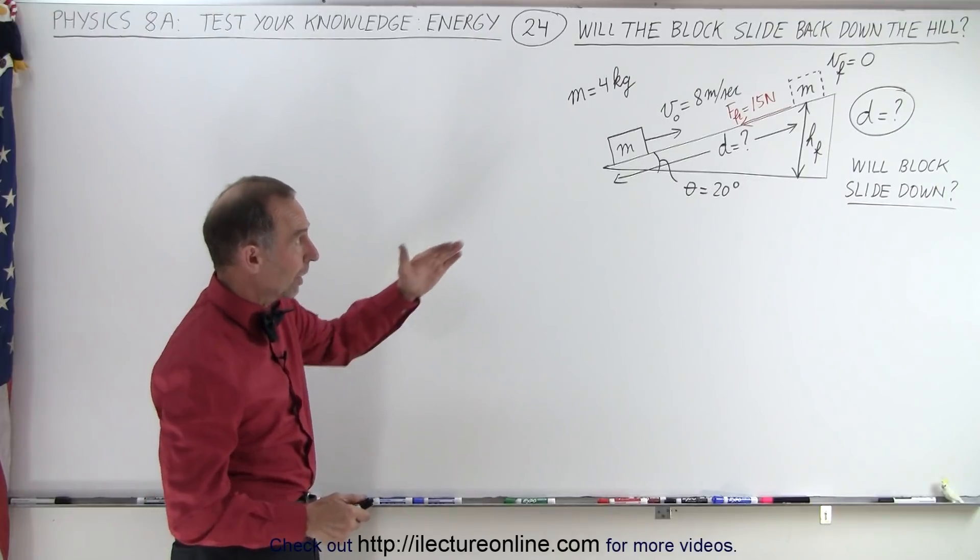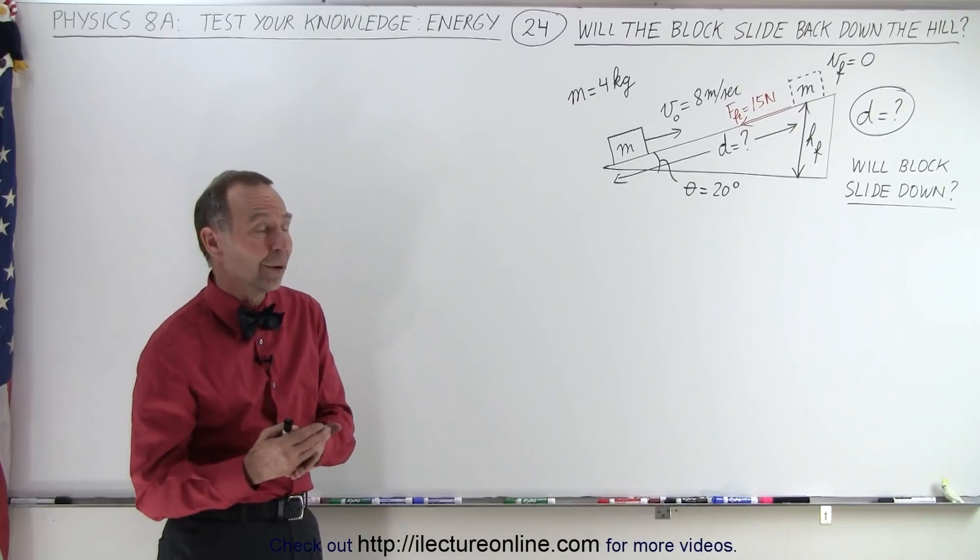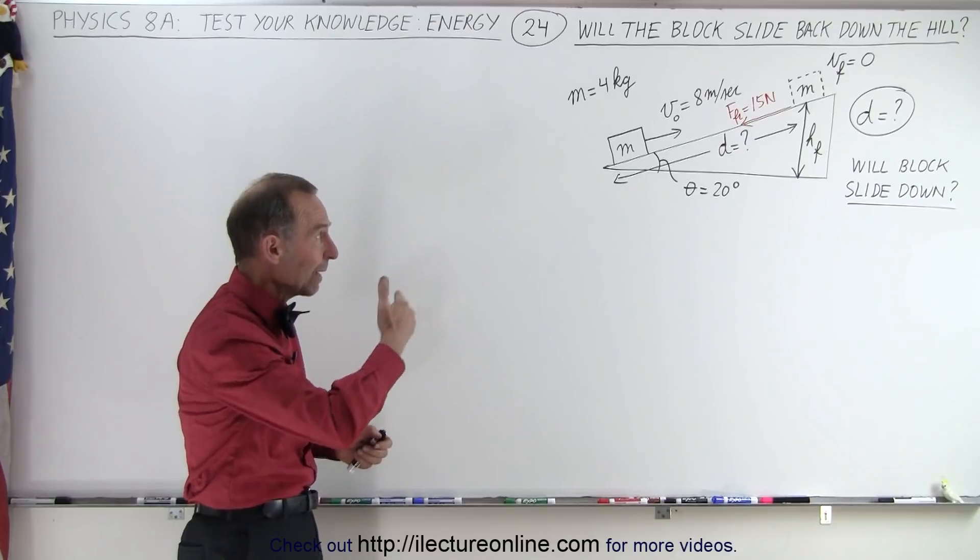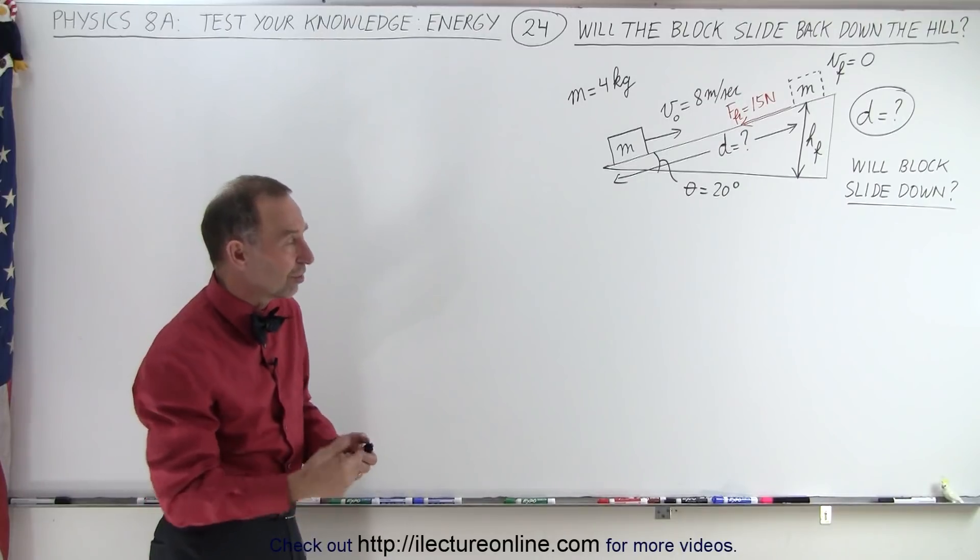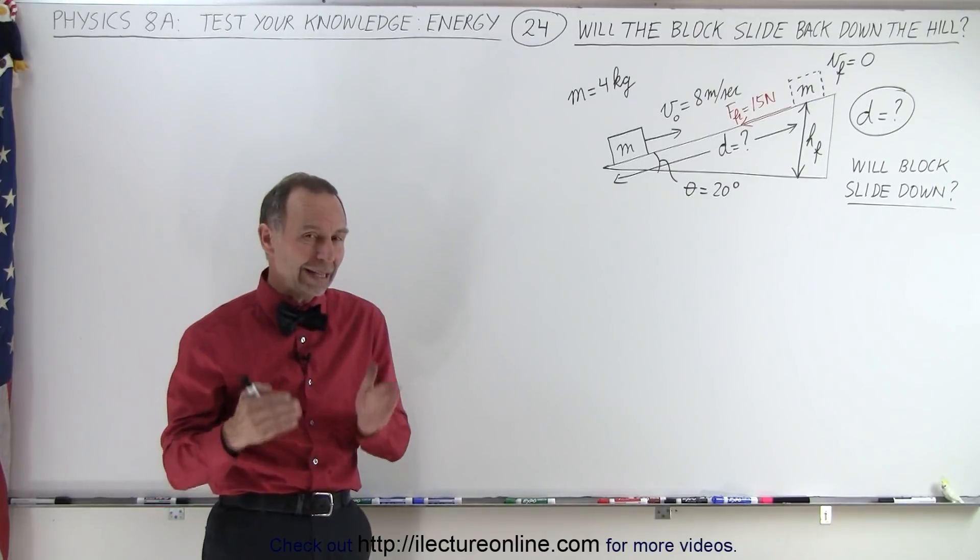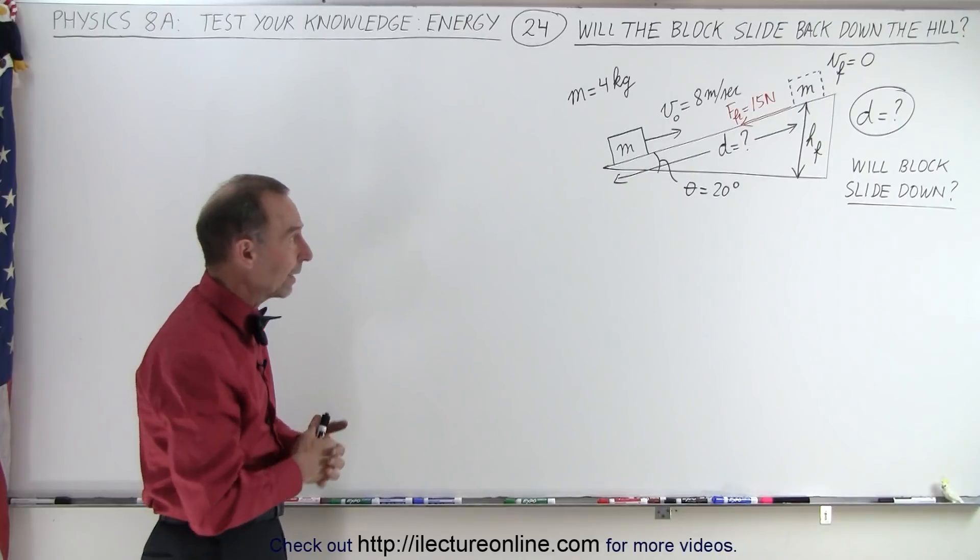At the end the block will gain a certain amount of height and the velocity at that point will be zero. Now the question is, is the friction force sufficient to keep the block from sliding back down the hill once it's reached its maximum height and reached the farthest distance d? So we're going to find the distance d and then determine if the block will slide back down the hill.